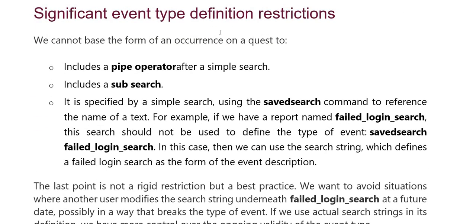Significant event type definition restrictions: there are certain forms of occurrence we cannot use. First, you cannot include a pipe operation after a simple search.